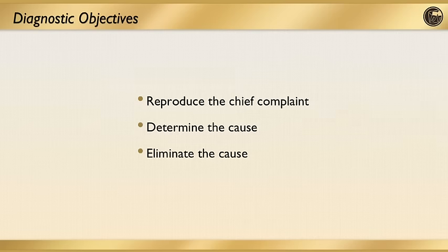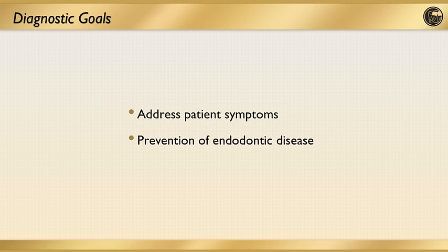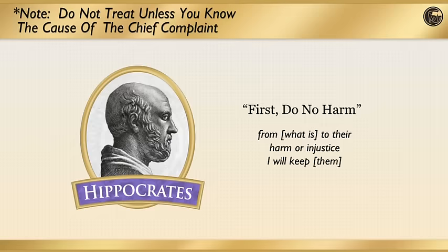These are our primary diagnostic objectives. If the first two can't be done, the astute clinician doesn't proceed with treatment. The objectives are to reproduce the chief complaint, determine the cause of that chief complaint, and eliminate the cause. Our ultimate goal is to help our patient's symptoms and prevent and eliminate endodontic disease. Always remember that despite a thorough assessment, the clinician may or may not be able to determine the exact nature of the patient's chief complaint. It's acceptable and even ethically required that a clinician not guess at the diagnosis — when in doubt, refer or ask your endodontist.